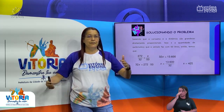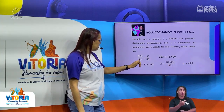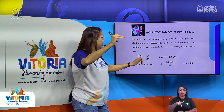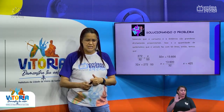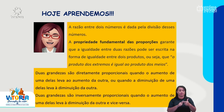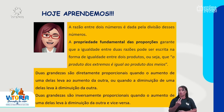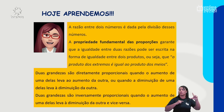Portanto, com 32 litros de etanol o automóvel percorre 272 quilômetros; com 50 litros de etanol, ele percorre 425 quilômetros. Em resumo: a razão entre dois números é dada pela divisão desses números; a propriedade fundamental das proporções garante que a igualdade entre duas razões pode ser escrita como igualdade entre dois produtos — o produto dos extremos é igual ao produto dos meios. Duas grandezas são diretamente proporcionais quando uma aumenta e a outra também aumenta, ou uma diminui e a outra também diminui. Duas grandezas são inversamente proporcionais quando o aumento de uma leva à diminuição da outra, e vice-versa.